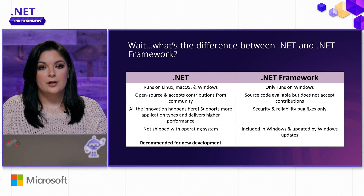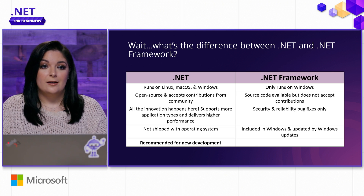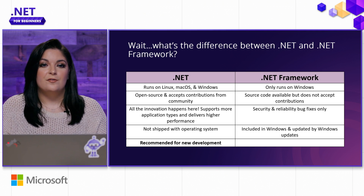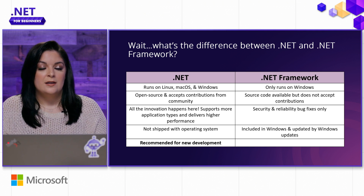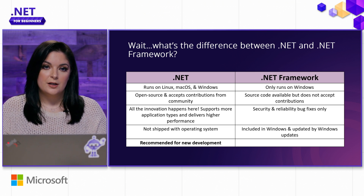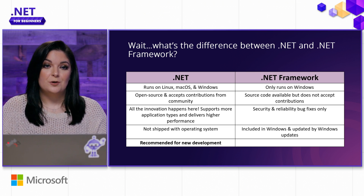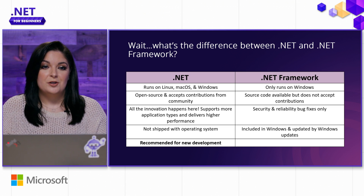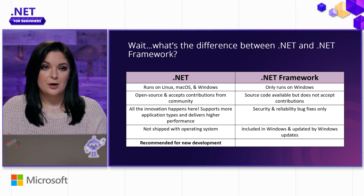.NET Framework's source code is available, but it does not accept contributions. Modern .NET is where all the innovation actually happens, and we support more application types. .NET Framework receives security and reliability bug fixes on a monthly basis. Modern .NET is not shipped with any particular operating system, whereas .NET Framework comes out of the box with Windows and is updated by Windows. The biggest difference to call out is that modern .NET is recommended for all new development — when you're taking on a new project, we highly recommend you go with modern .NET.